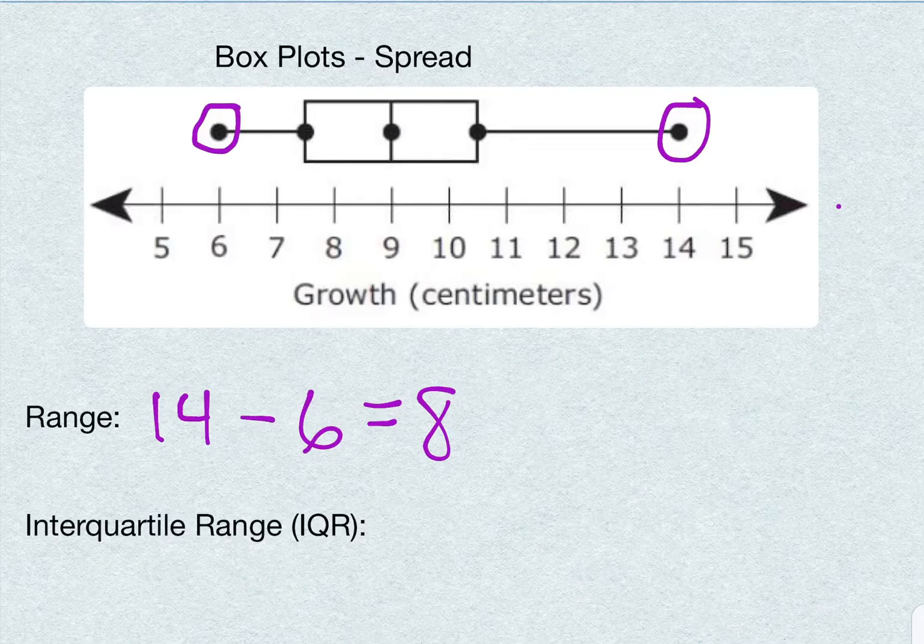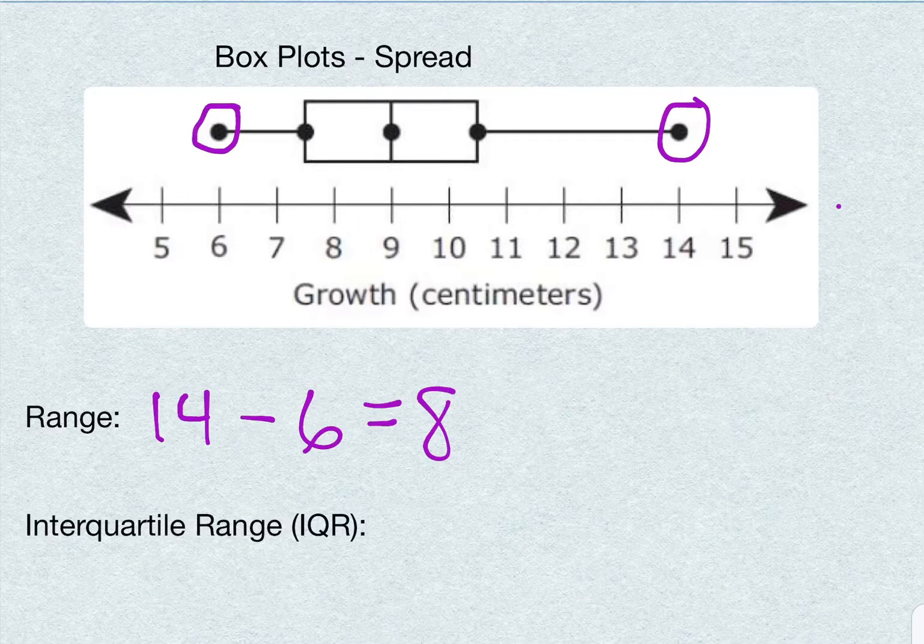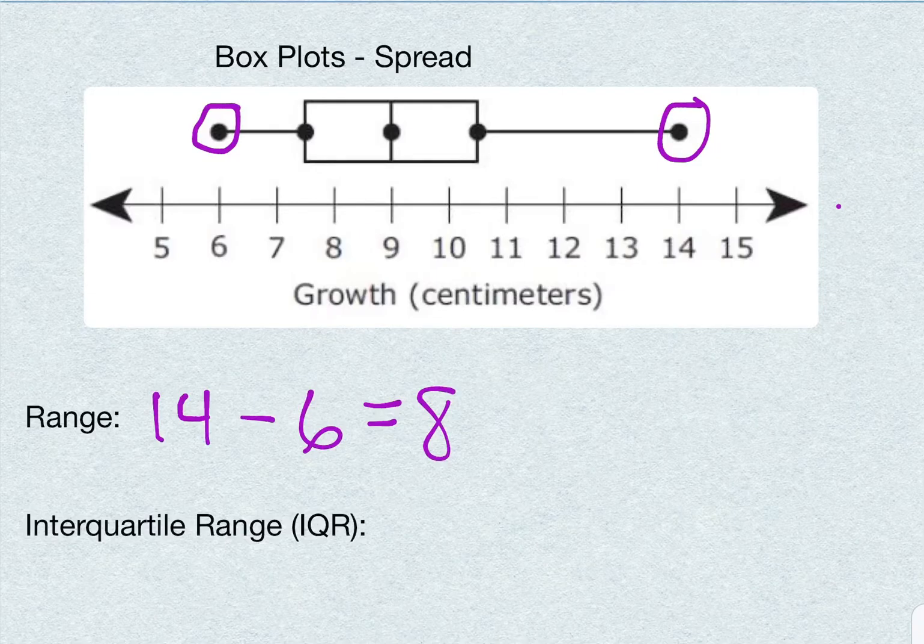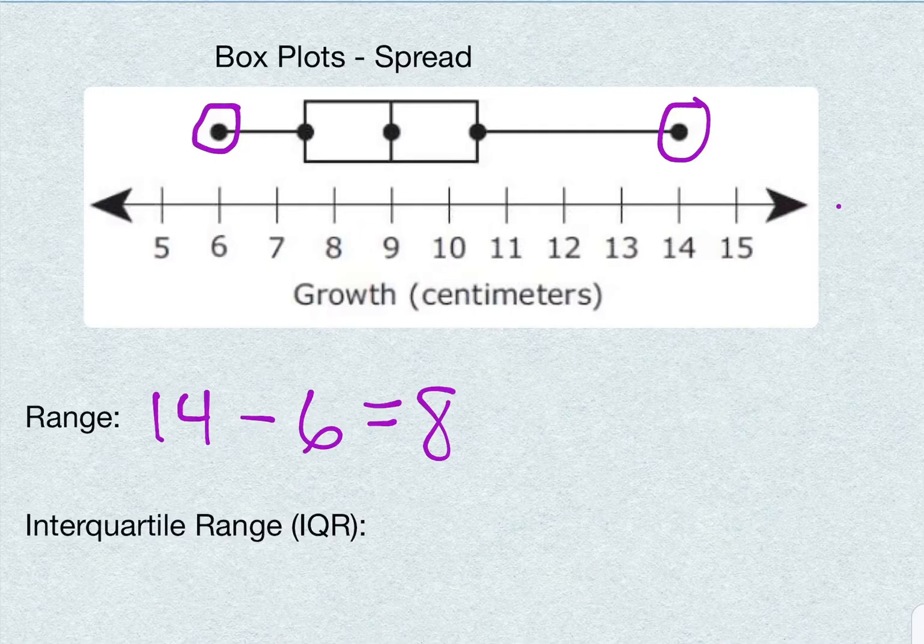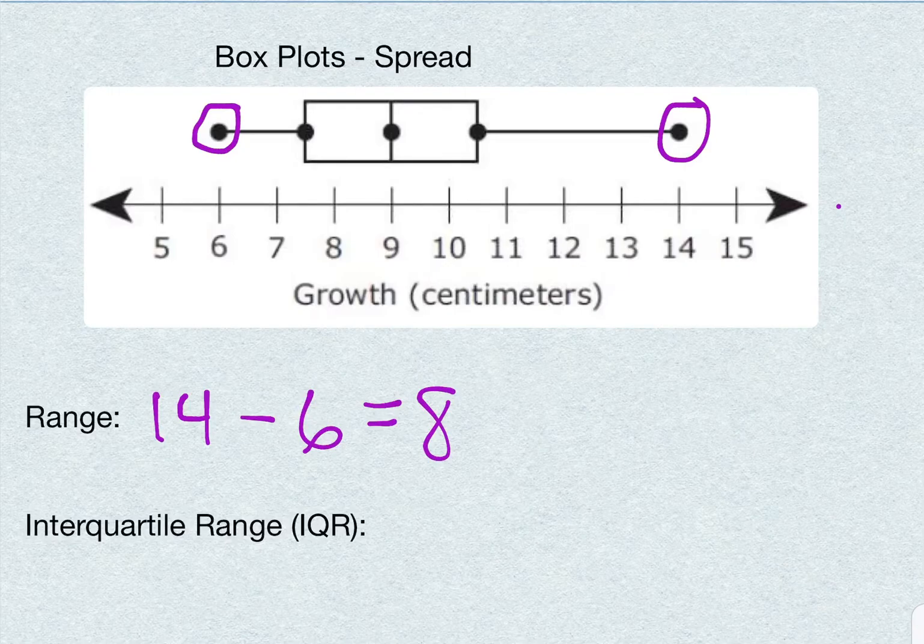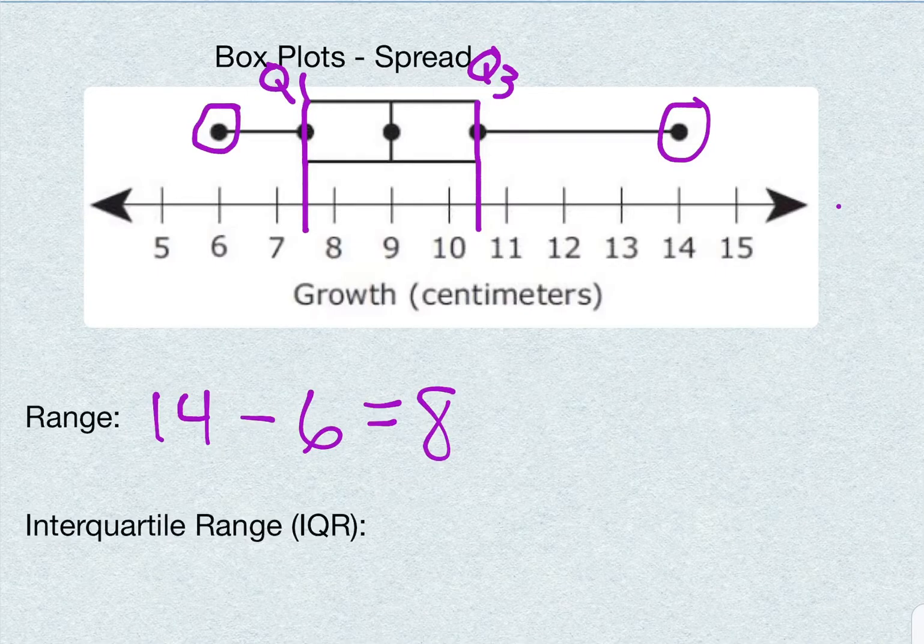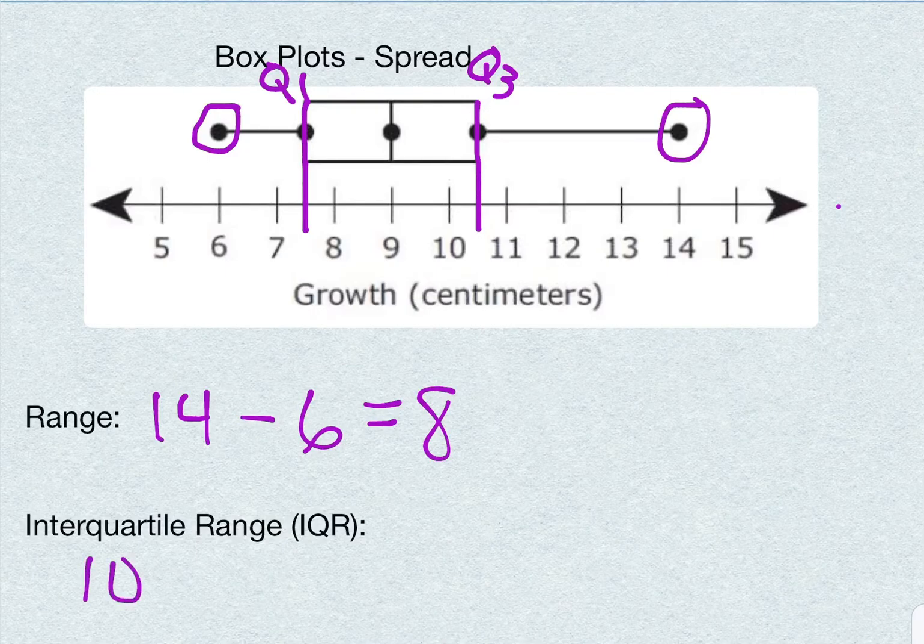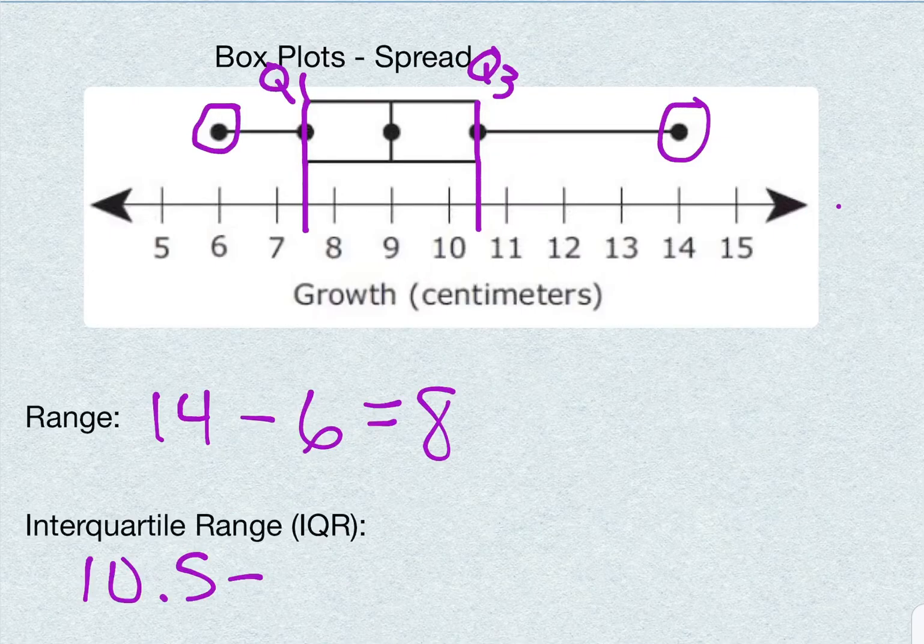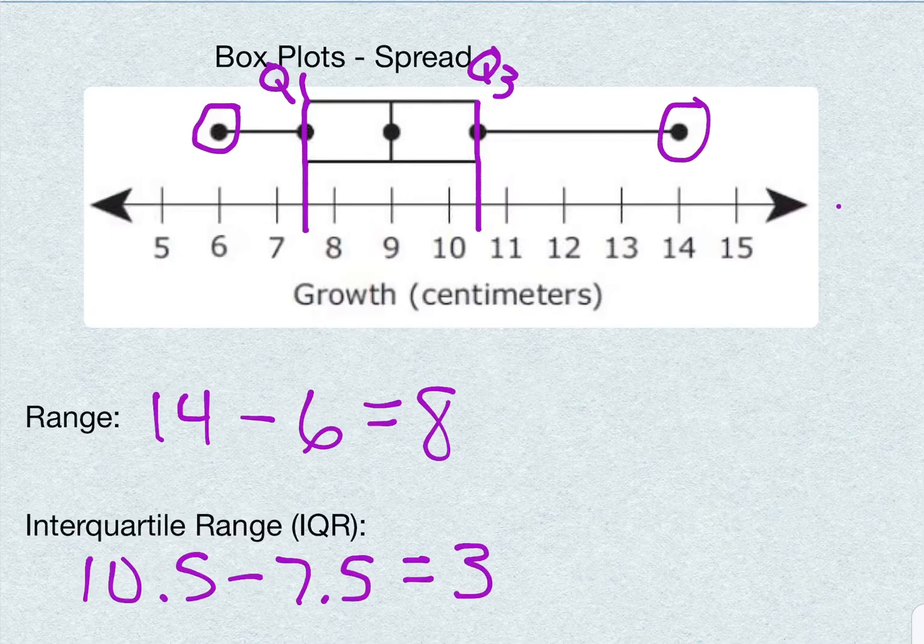Next, we're going to be looking at our interquartile range. So for this one, we also have this labeled in the first part of our presentation, and you also practiced this last week. So I want to know, what do you think the interquartile range is for this set of data? So for our interquartile range, we are looking at Q3, which is right here, and Q1. So this is our first and third quartile, found right there on the box plot, and then we have to subtract those. So Q3 is 10 and 5 tenths, and then Q1, first quartile, is 7 and 5 tenths. And when we subtract those, we get an interquartile range of three.